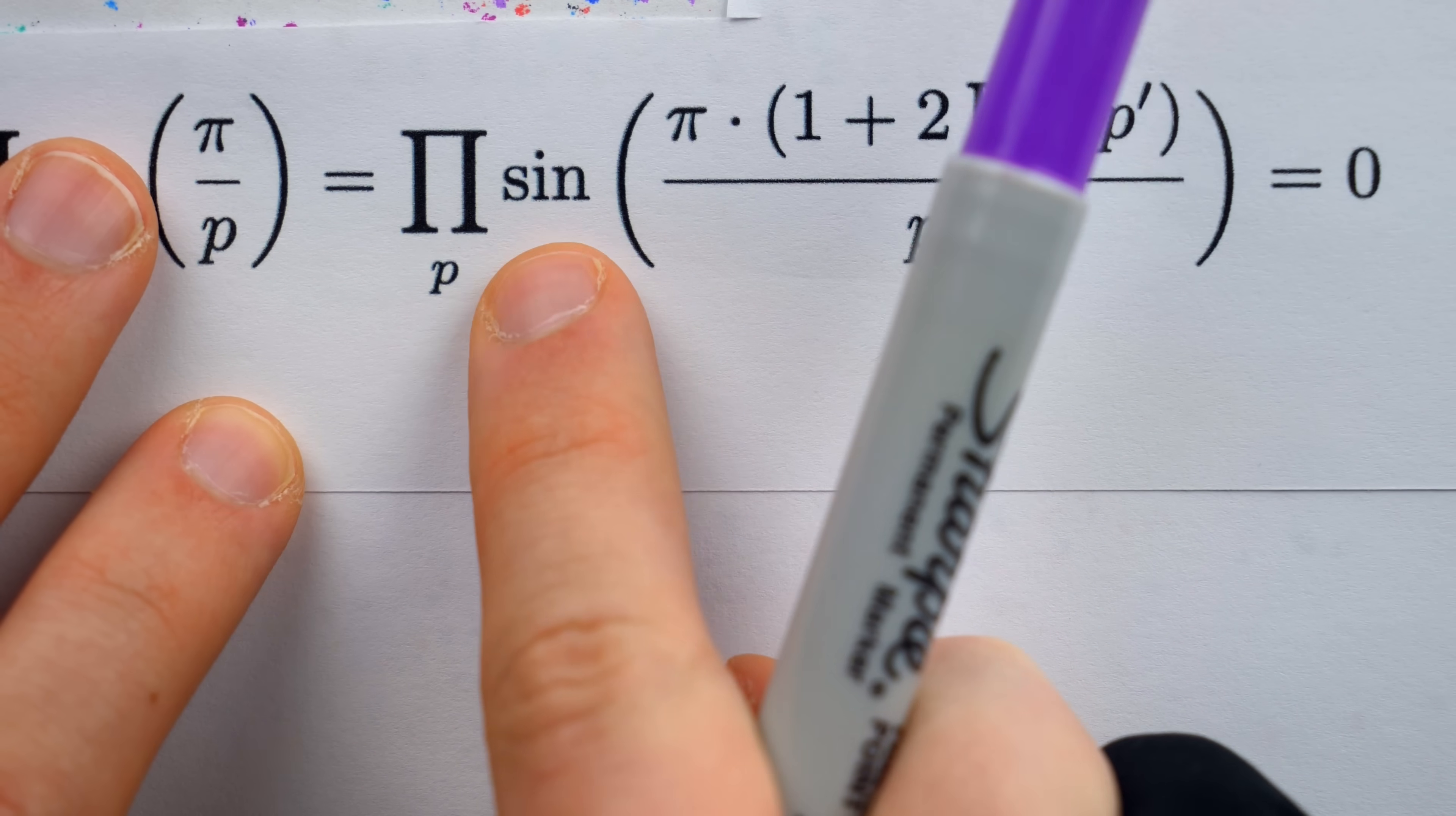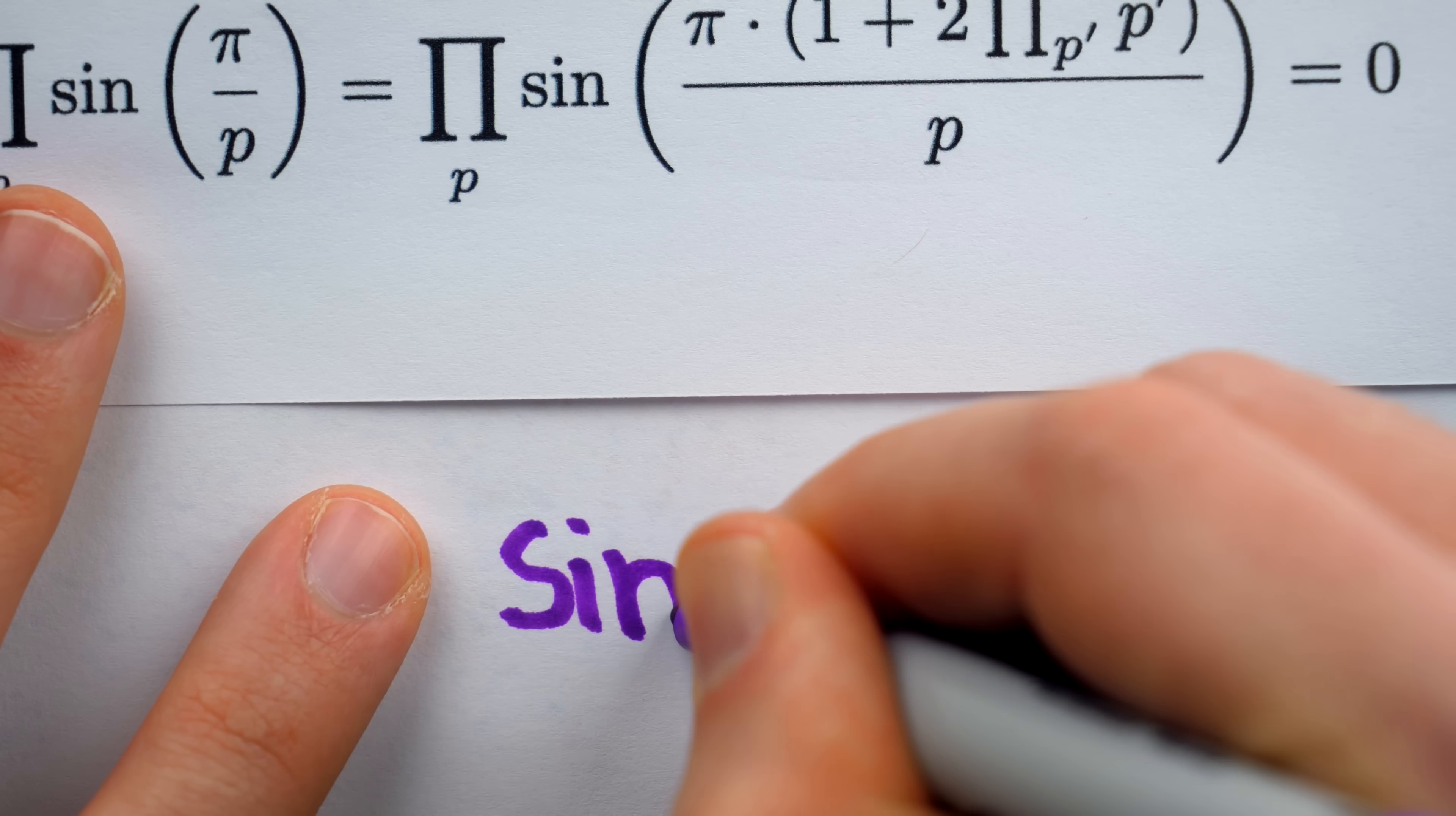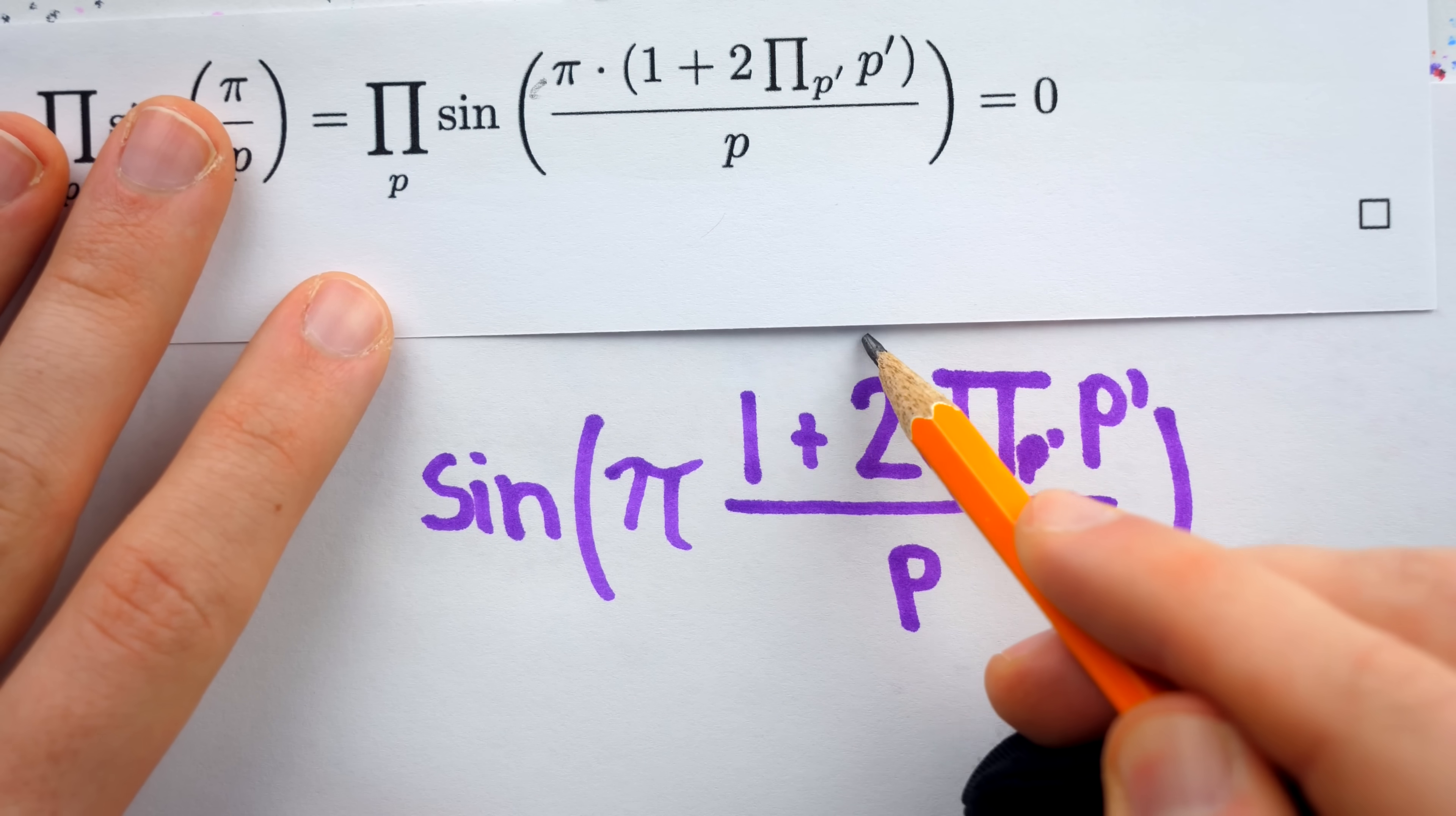So remember, this is a product of this expression, but for every prime number p. So each factor in this product looks like this: sine of all of this stuff, which can be written as sine of pi times all of this stuff. So we've just slid the pi out of the fraction to write it like this.